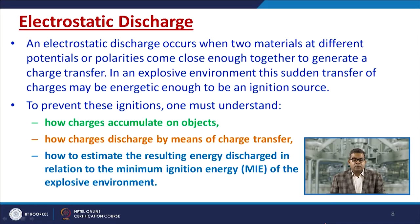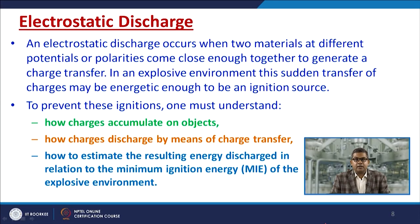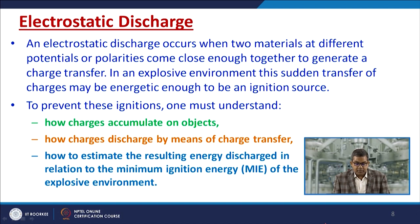An electrostatic discharge usually occurs when two materials at different potentials or polarities come close enough together to generate a charge transfer. In an explosive environment, this sudden transfer of charge may be energetic enough to be a source of ignition. To prevent this, one must understand how charge accumulates on an object, how charges are discharged by charge transfer, and how to estimate the resulting energy discharge relative to the minimum ignition energy of the explosive environment.